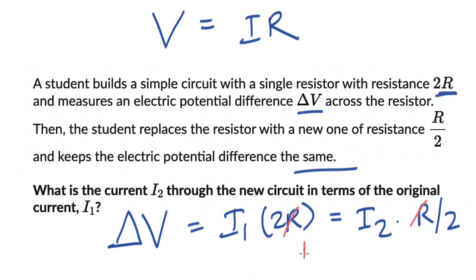This is equal to 4 times I₁. The 2 in the denominator goes to the left and gets multiplied with this 2, and this becomes I₂ = 4I₁.